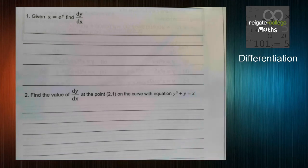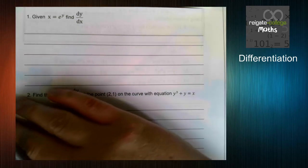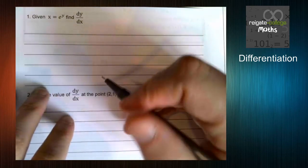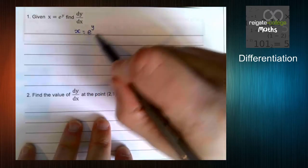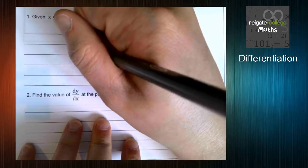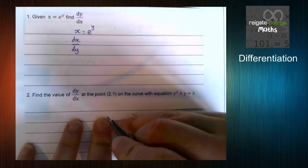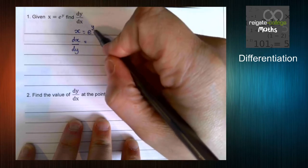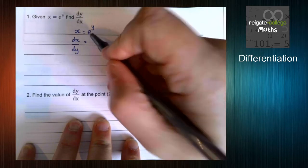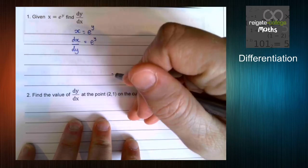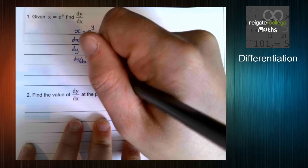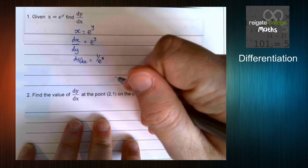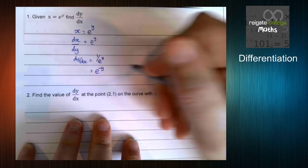So this is the first example we're going to look at here. Given x = e^y, find dy/dx. Well, we can do this in a couple of ways, but we're going to use the method we just looked at. So we know that x is e^y. We have x as a function of y, which means we can differentiate both sides with respect to y. And we know that if we differentiate e^y, we get e^y. Here we have, therefore, dy/dx = 1/e^y. And we can tidy that up if we want to, to e^(-y).